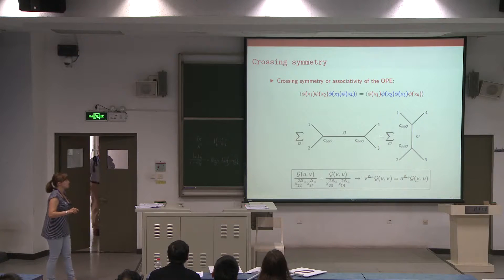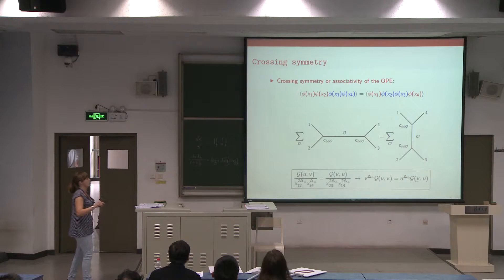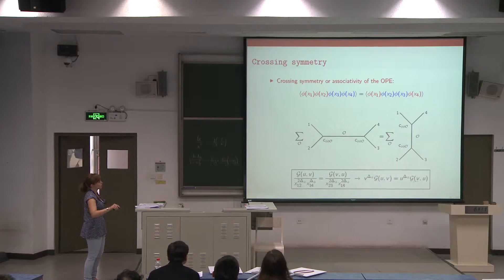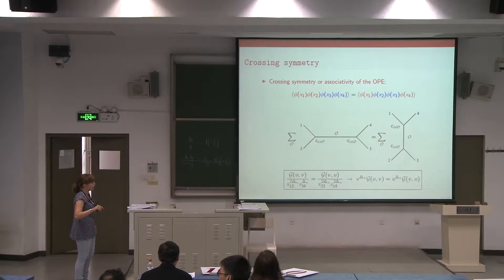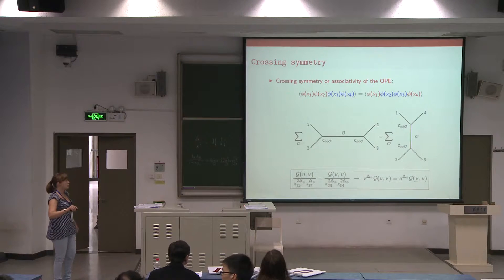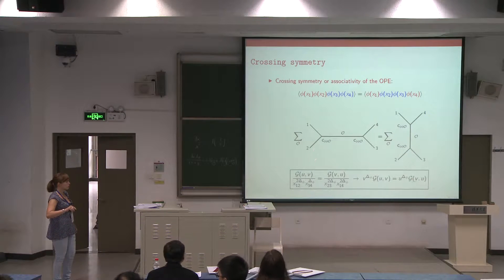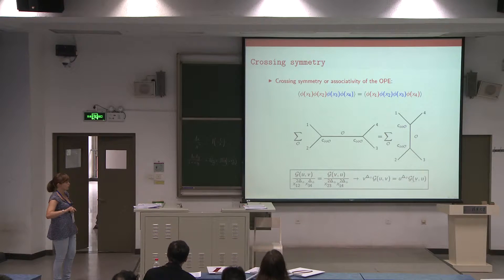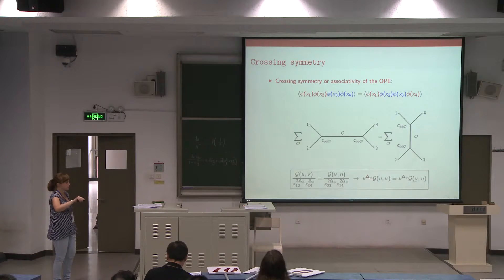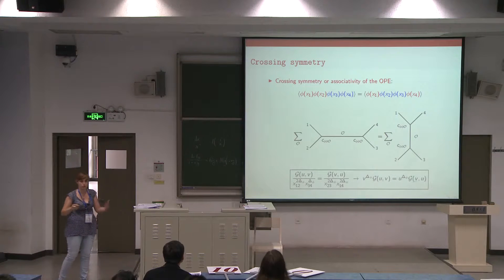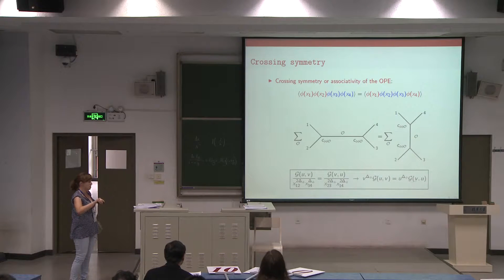We can also use associativity of the operator product expansion. Namely, we can apply the OPE between different pairs of operators, and of course the result should be the same. When we exchange one with three, we switch from u,v to v,u, and we get some non-trivial factor, which leads to the crossing equation. One needs to plug back the conformal block decomposition into this equation. This is what's called the crossing equation.